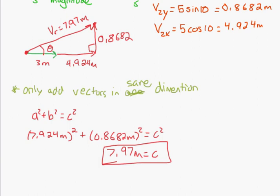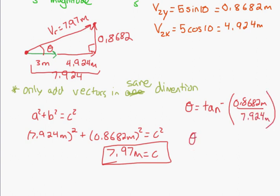And so again, some trigonometry. So theta is equal to the inverse tan of the opposite. Remember tan, so CAH TOA, opposite over adjacent, so 0.8682 meters, divided by the adjacent, which is the total of these, which is 7.924. So 7.924 meters. And so I'm going to get theta is equal to 6.25 degrees.